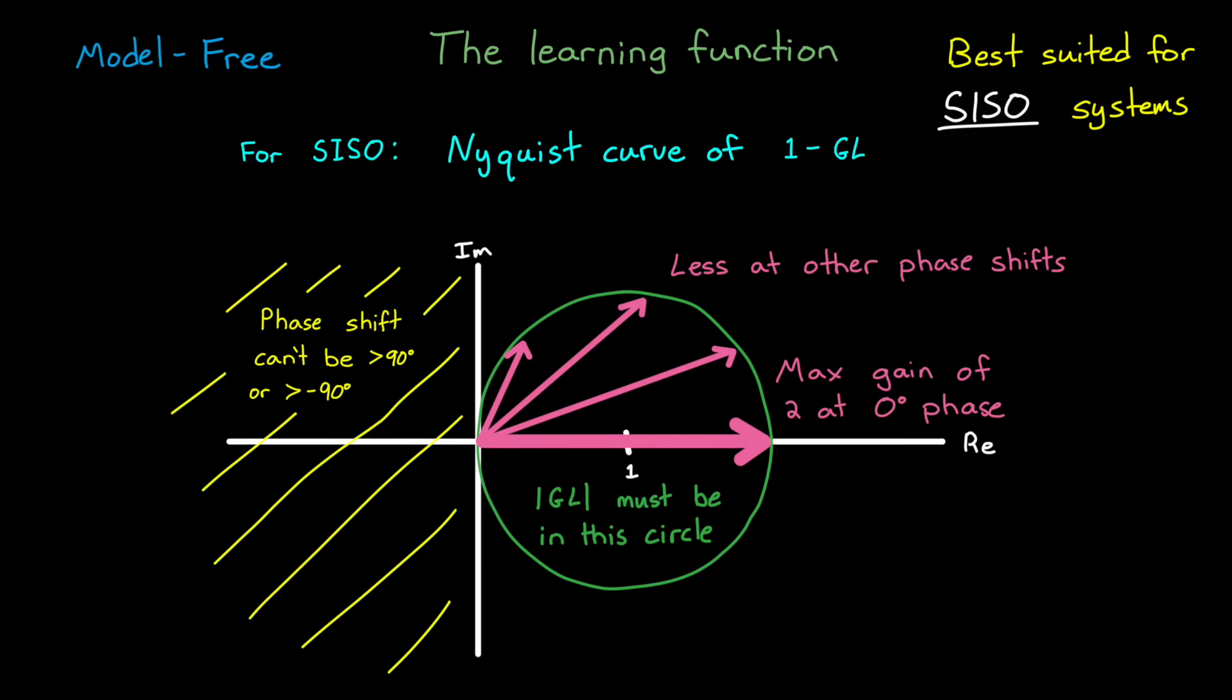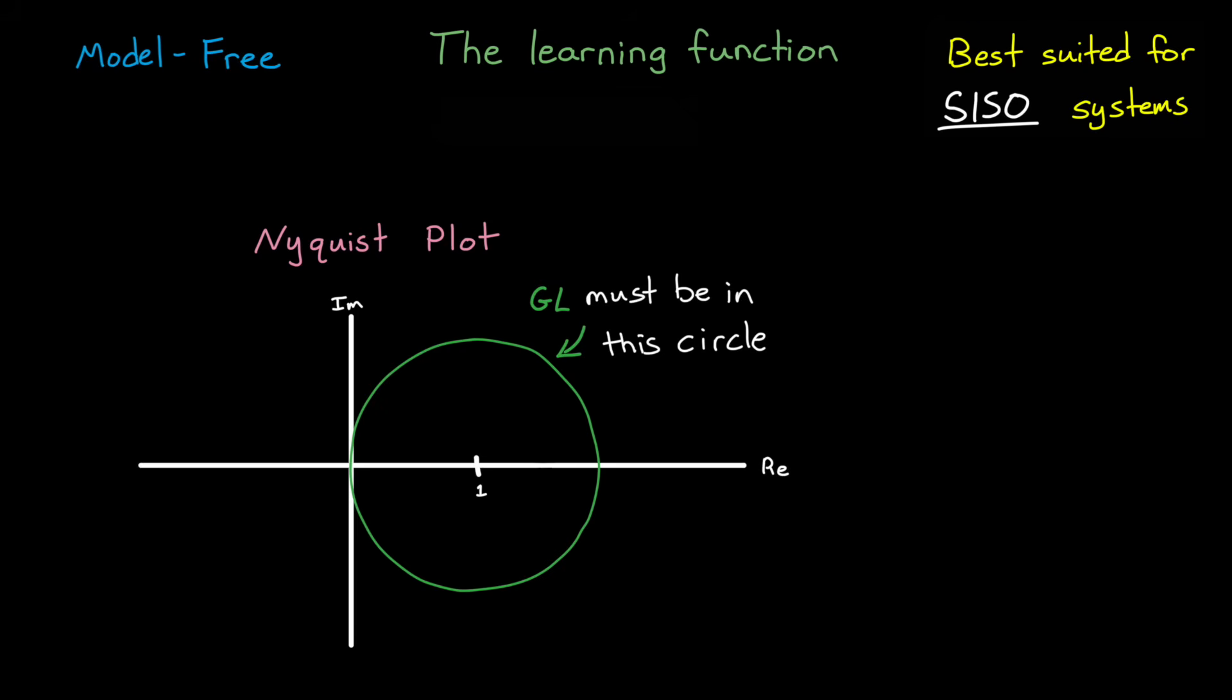But this is where clever choices for the learning function l come into play. Even if we don't know the exact dynamics of g, knowing the approximate dynamics can still help us determine what l should be.